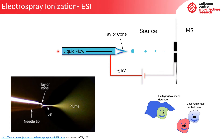The electrospray process consists of a flow of liquid or eluent through a metal needle or capillary, which is held at high potential with respect to the front end of the mass spectrometer, which acts as a counter electrode. The voltage applied to the needle causes a separation of charge in the liquid phase. The liquid forms a cone shape at the tip of the capillary known as the Taylor cone, from which a jet of liquid is emitted, which gradually breaks up into charged droplets. These become smaller in size due to both solvent evaporation and Coulombic fission, before the formation of ions which enter the gas phase, which are then taken into the mass spectrometer.